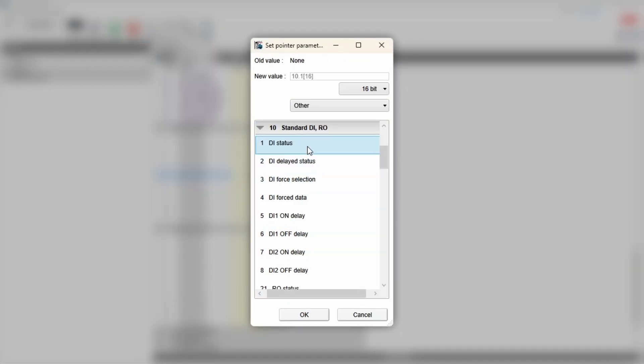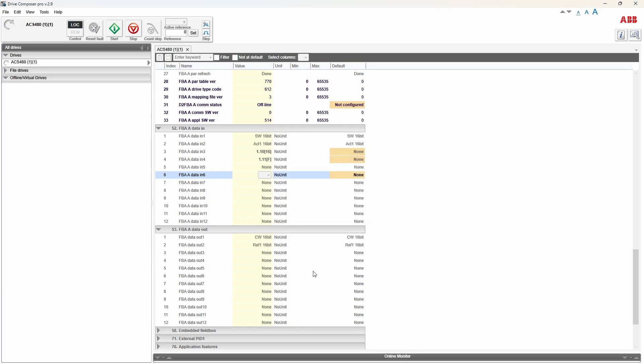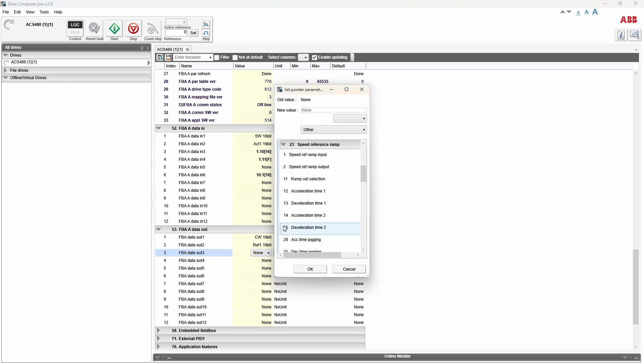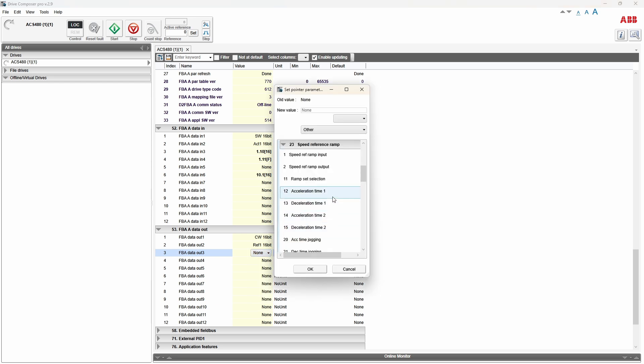The same works for outputs as well. If, let's say, you want to tune your acceleration ramp on the fly, double-click on data out 3, go to group 23 and select acceleration time. I'll pass on that.